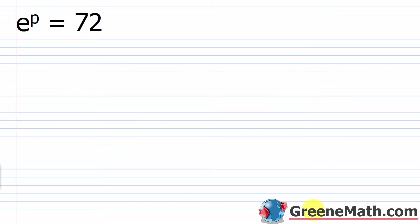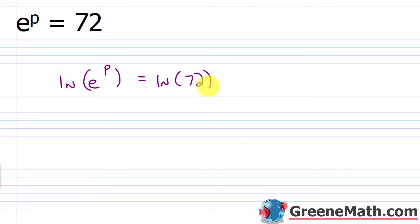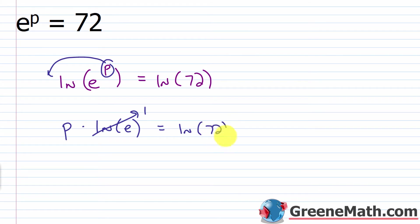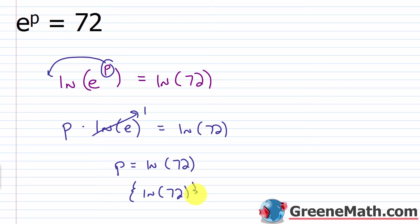What if we have e raised to the power of p and this equals 72? Whenever I'm working with e, I want to think about the natural logarithm. If I take the natural log of e, it's equal to 1. So if I say ln of e raised to the power of p equals ln of 72, I can bring the exponent down: p times ln of e. Since ln of e equals 1 — it's log base e of e, which by definition is 1 — I'm left with p is equal to ln of 72. In solution set notation, I'll put ln of 72 inside set braces.